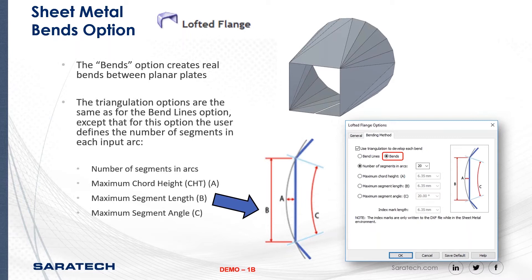The triangulation options are the same as for the bend line options, except that the user defines the number of segments in each input. On the last slide we had 10; this time we've got 20.